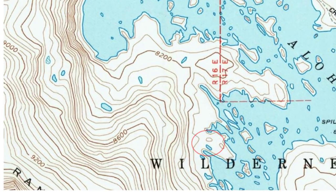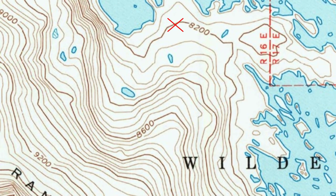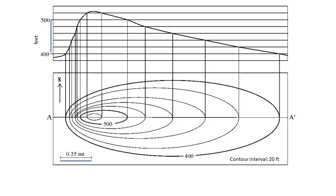Whether an isobath or a contour line, remember that only the points on the line have that exact value for elevation or depth — either side of the line will be greater or smaller. As we get comfortable reading contour lines and isobaths and recognizing shapes of hills and canyons, one useful tool for visualizing relief is to draw a topographic or bathymetric profile. These are especially useful if we plan to hike and want to know how steep the slopes are.